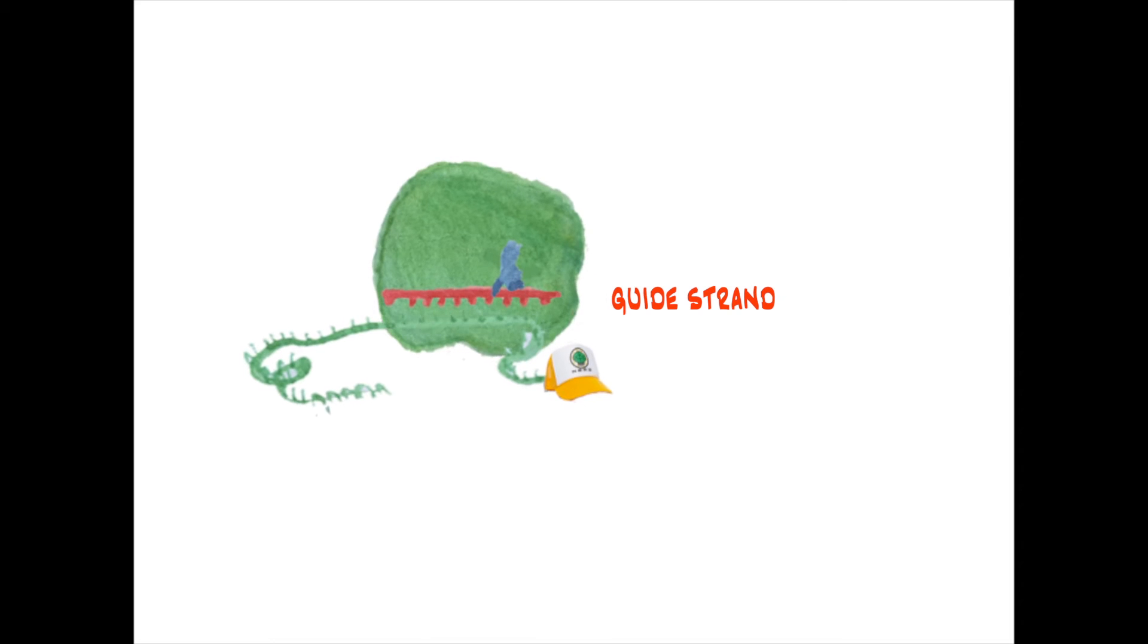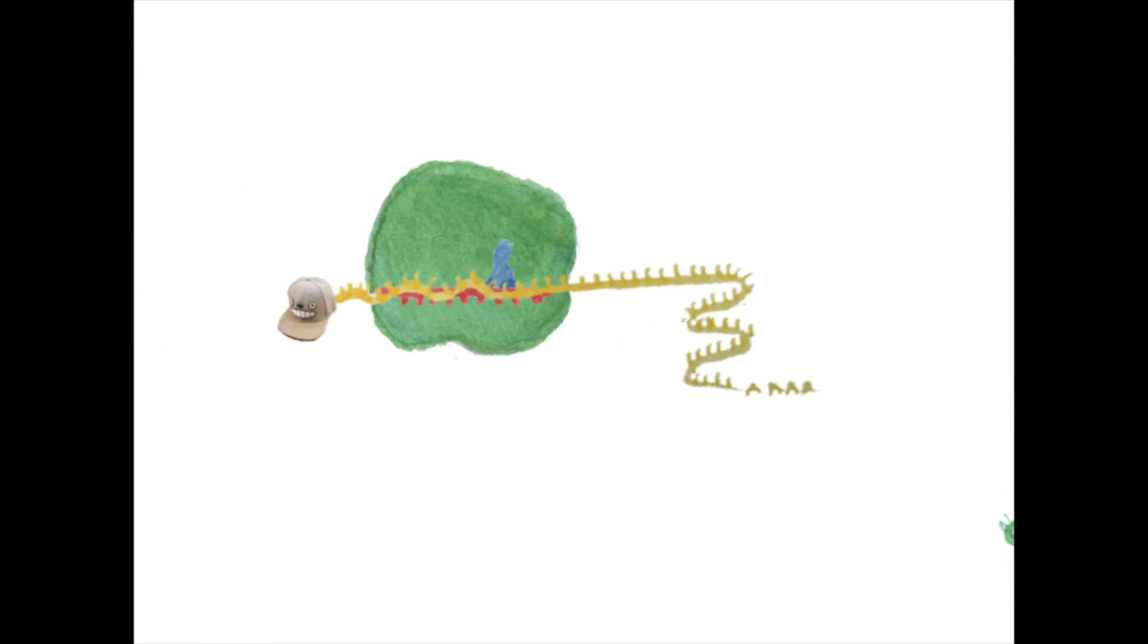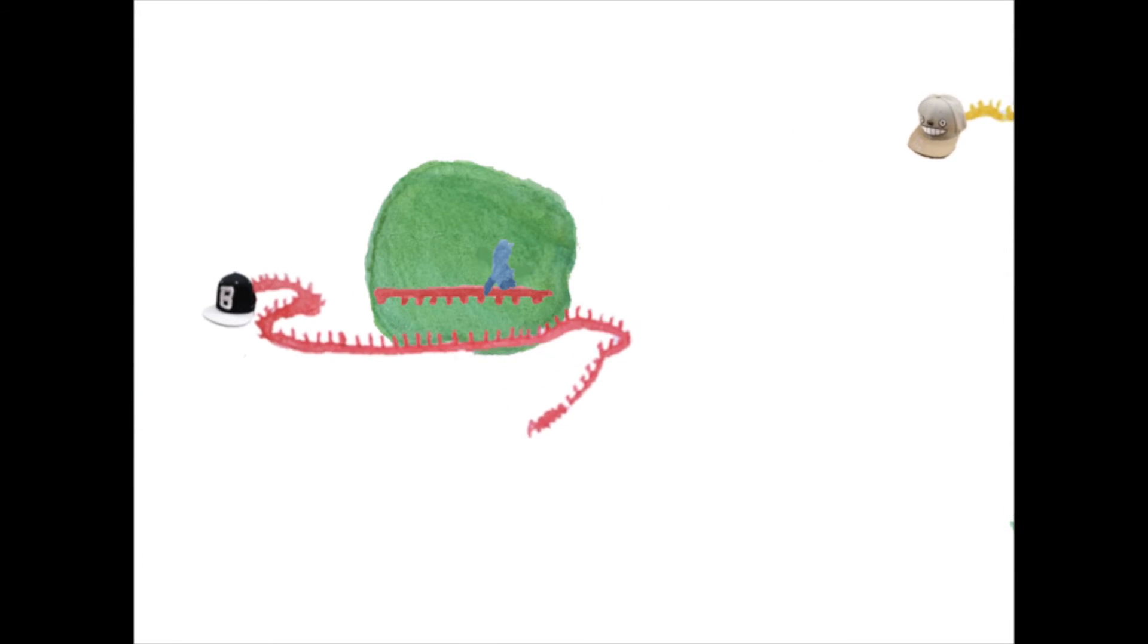The guide strand allows RISC to recognize the target mRNA. Once the target mRNA is recognized, RISC cuts the mRNA in a single break.